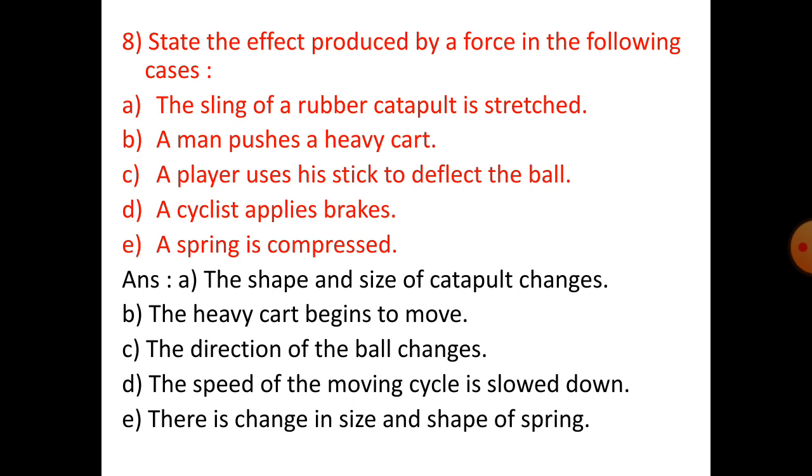Question 8: State the effect produced by a force in the following cases: (a) The sling of a rubber catapult is stretched. (b) A man pushes a heavy cart. (c) A player uses his stick to deflect the ball. (d) A cyclist applies brakes. (e) A spring is compressed. Answers: (a) The shape and size of catapult changes. (b) The heavy cart begins to move. (c) The direction of the ball changes. (d) The speed of the moving cycle is slowed down. (e) There is change in size and shape of spring.